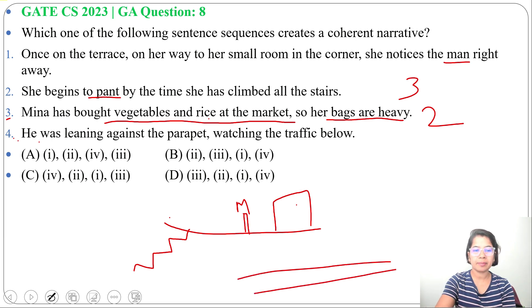So what will be the sequence? First, Mina bought the vegetables and rice at the market, so her bags are heavy. Then she is climbing the stairs.